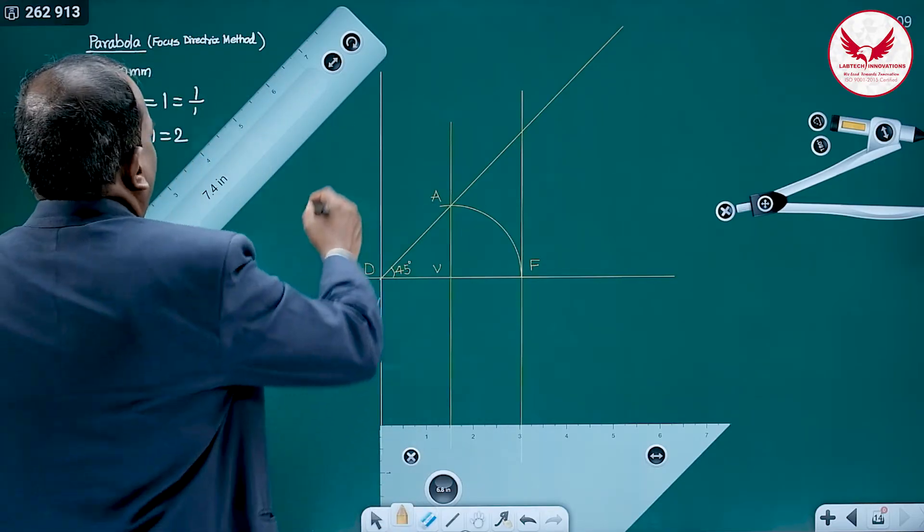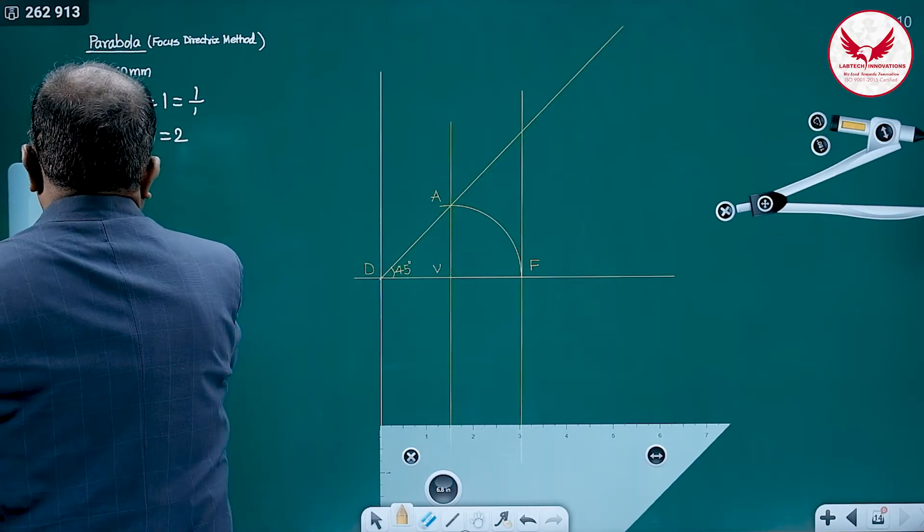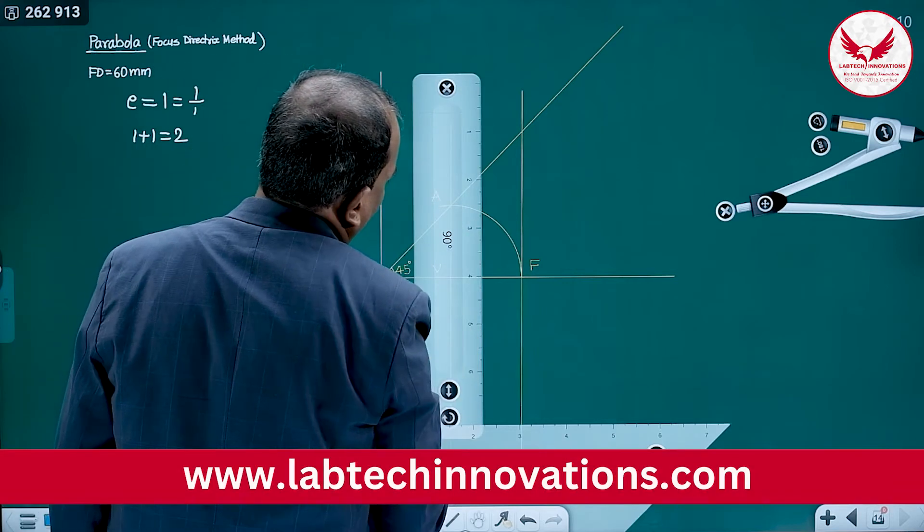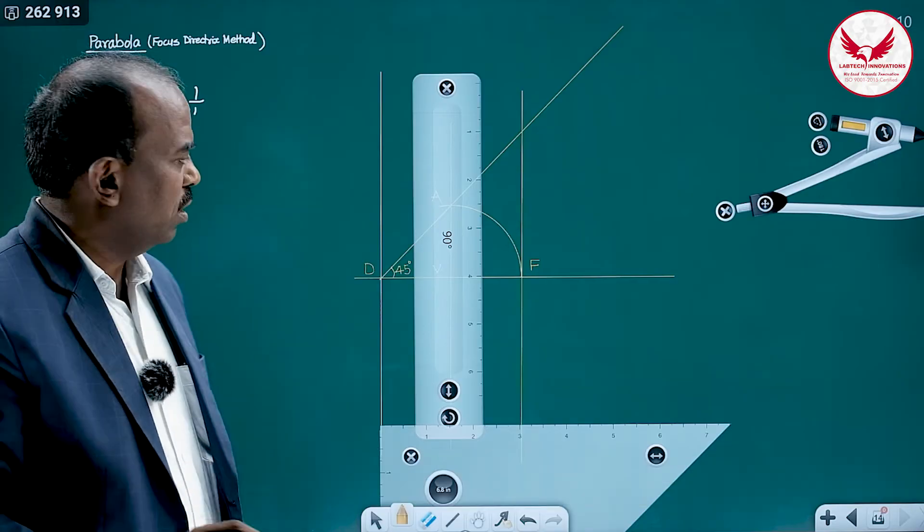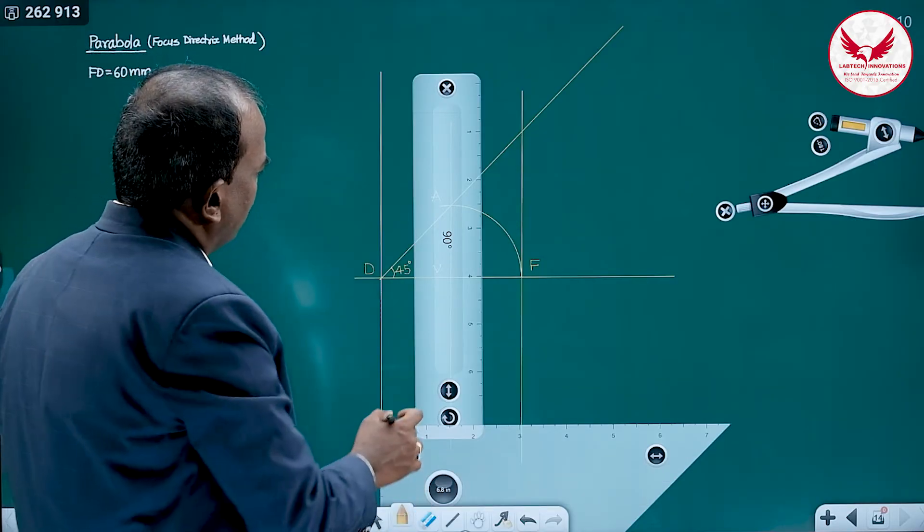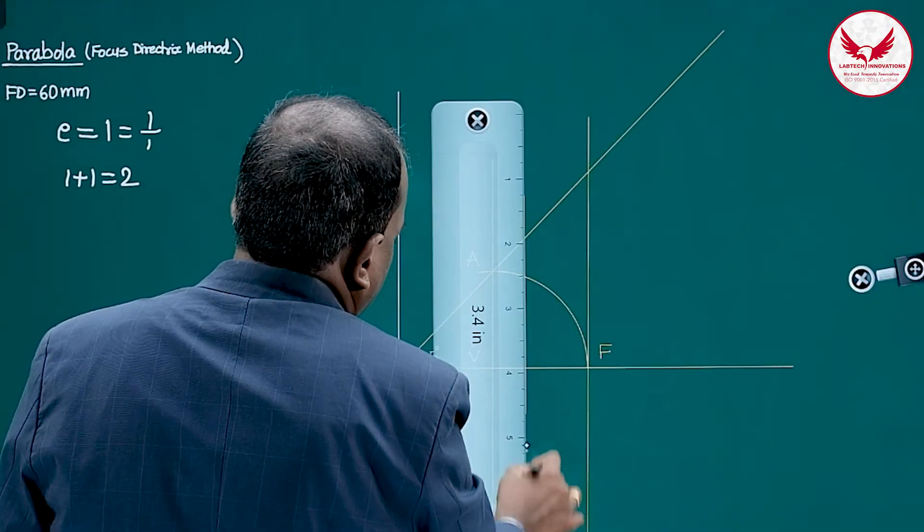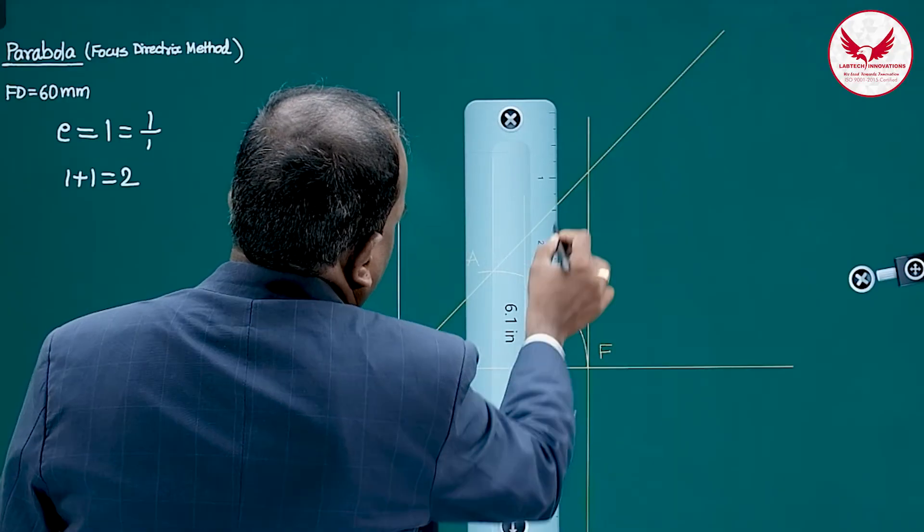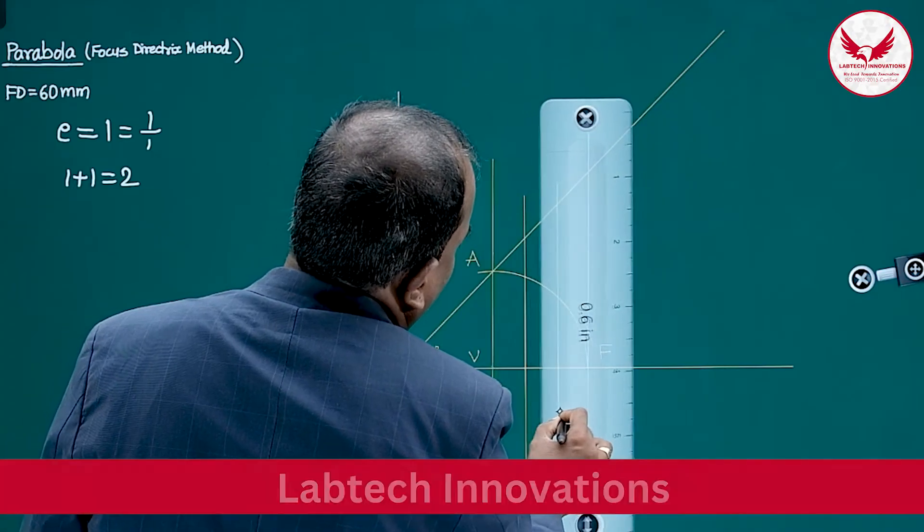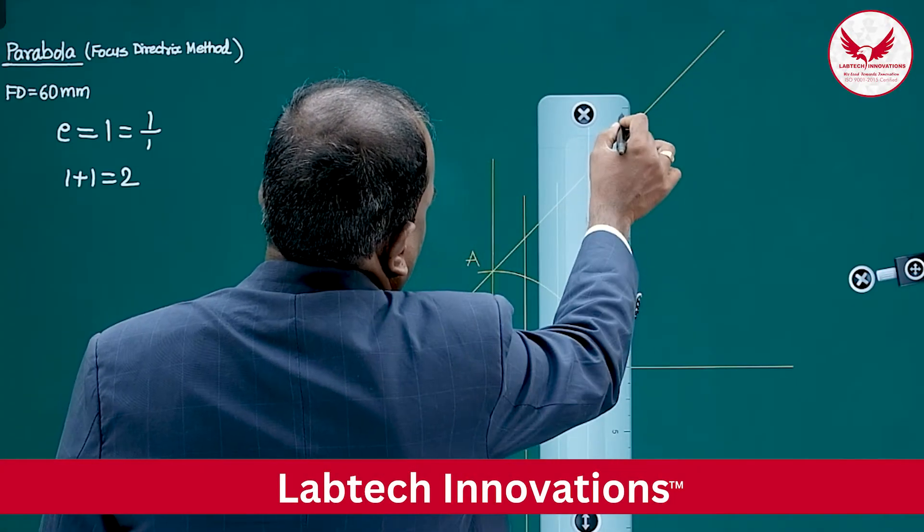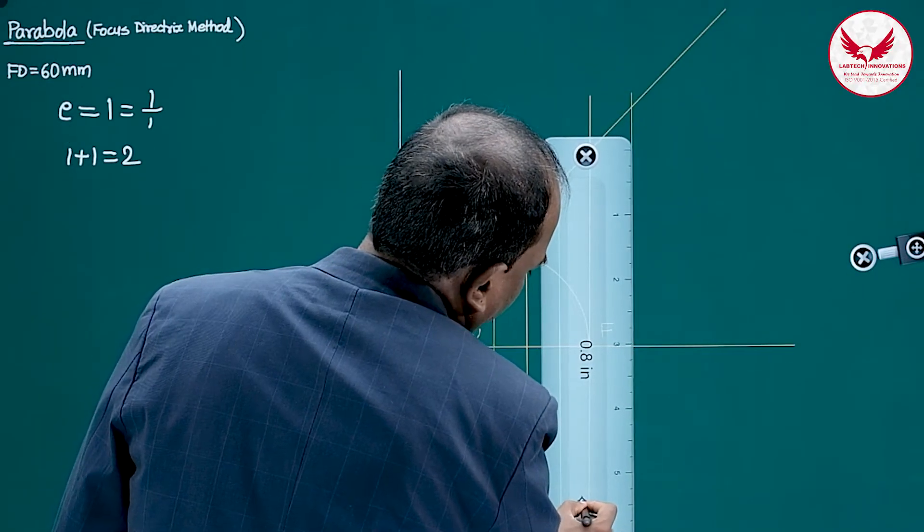After that, towards right of V, for getting the more points, draw some additional vertical lines. It may be 1, 2, 3, 4. For one line, always we get the two points. I am marking this is one line, then this is second line. You can take these distances randomly, that third line is through focus. It is the fourth line. Even if we take these four lines, these are more than enough for drawing the proper parabola.